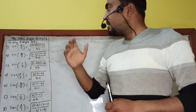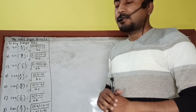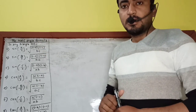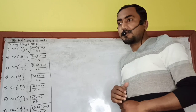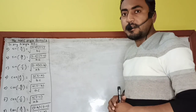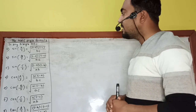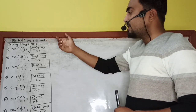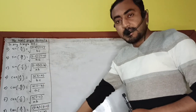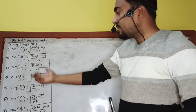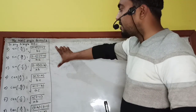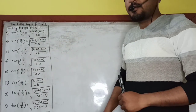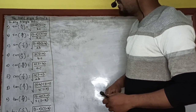And now today we are going to discuss about the half angle formula given in the third chapter of trigonometry of grade 11 in the syllabus of NEB. The statement has a long range from A to I — 3 for sine, 3 for cosine, and 3 for tangent. So let us see one by one.